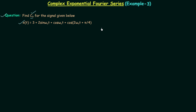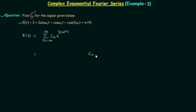We need to convert this expansion to complex exponential Fourier series expansion. The complex exponential Fourier series expansion is equal to summation n equal to minus infinity to infinity Cn e raised to power jn omega naught t. When n is equal to zero we will have C0 e raised to power j0 omega naught t, which simplifies to C0. When n is equal to 1 we will have C1 e raised to power j omega naught t.